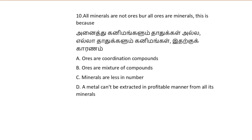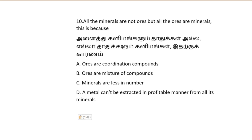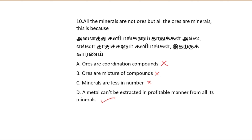All the minerals are not ores but all the ores are minerals. This is because a metal cannot be extracted in a profitable manner from all its minerals — yes, this is correct. Ores are the minerals from which metals can be extracted in large amounts in a profitable manner. So option D is correct.